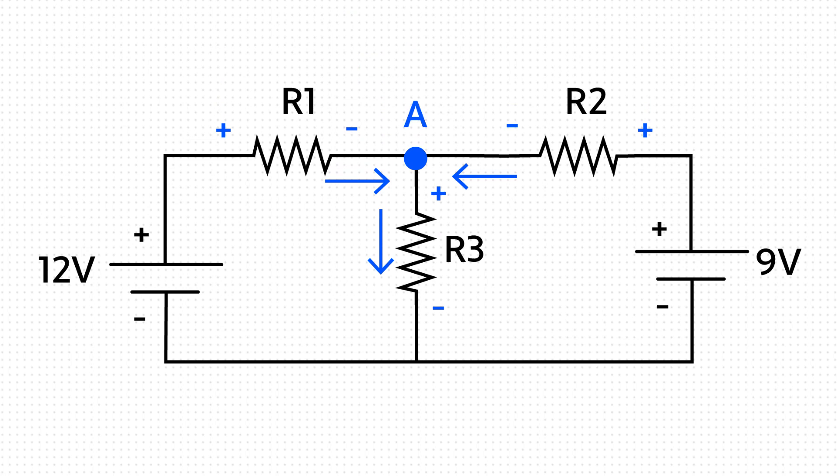Now it's time to tag our components' polarity. Resistors cause voltage drops, so the current must be flowing from a higher potential to a lower potential — that means positive to negative. For R1, starting from the 12-volt power supply, we're going to have positive then negative. In R2, starting from the 9-volt power supply, we have positive to negative. And in R3, we have positive to negative starting on the upper extremity of the resistor.